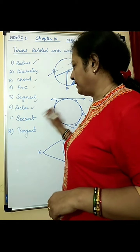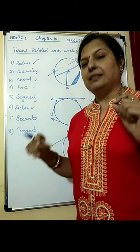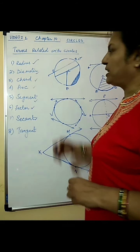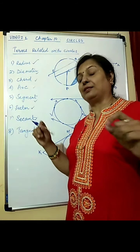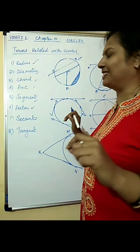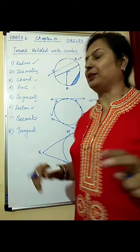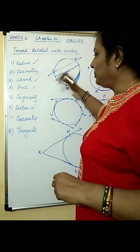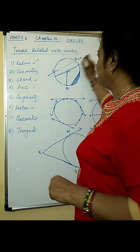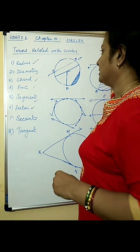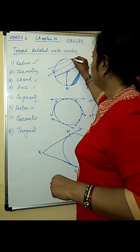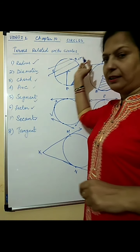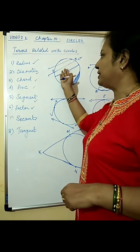Secant is a line which intersects the circle at two different points, say P and Q. A secant can be of two different types: one which completely intersects the circle and crosses it, and another which intersects the circle at two different points but may not cross it further.